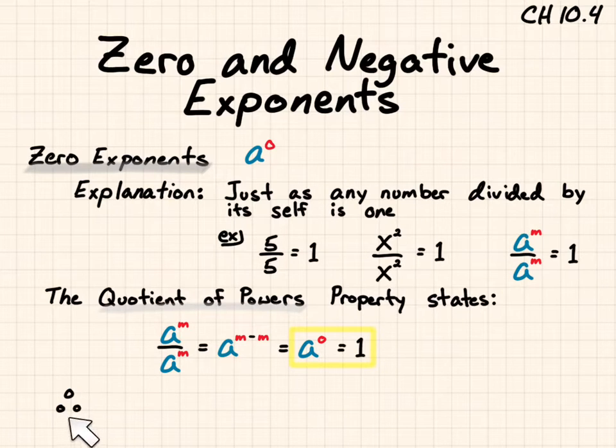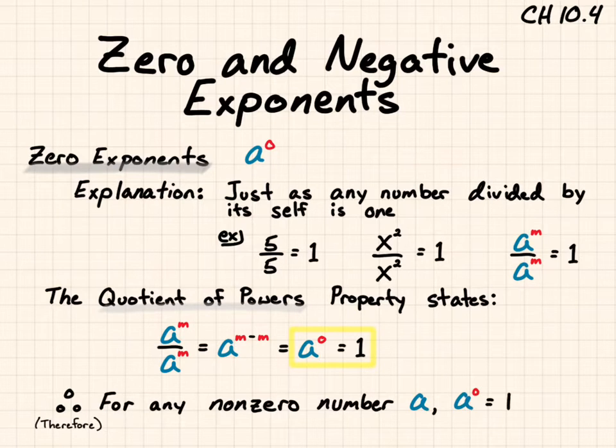So we put this symbol in here to represent therefore. Therefore, for any non-zero number a, a to the zero equals 1. Anything raised to the power of zero is 1.